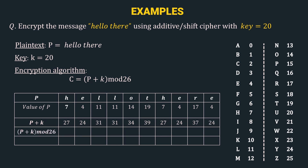The next row is P + K mod 26, so let's apply the modulus operator. A simple trick we can use in additive cipher is: if the number is greater than 26, we just subtract 26 from the given number. So the first number is 27, which is greater than 26, so we subtract 26 and get 1. The second is 24 — since it is less than 26, we keep 24. Then we have 31; we subtract 26 and get 5. We apply the same logic for all other numbers.